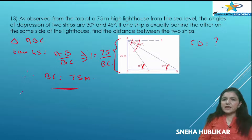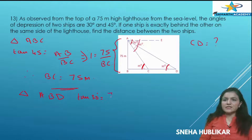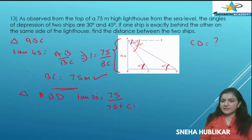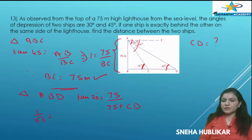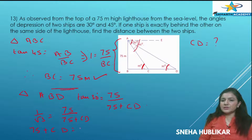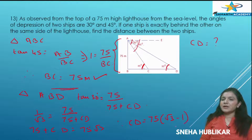Now consider triangle ABD: tan 30° equals AB by (BC plus CD), which is 75 by (75 plus CD). Tan 30 is 1 by root 3, so 1 by root 3 equals 75 by (75 plus CD). Cross-multiplying: 75 plus CD equals 75 root 3. Therefore CD equals 75 root 3 minus 75, which equals 75(root 3 minus 1) meters.